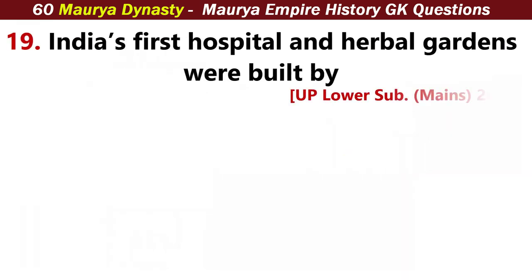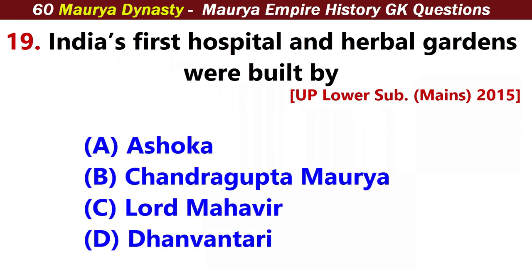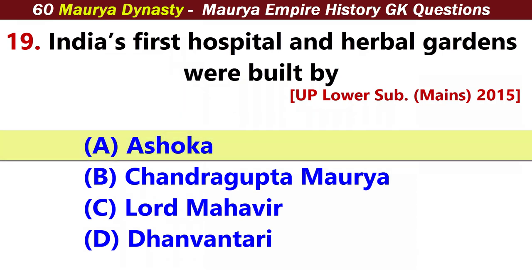India's first hospital and herbal gardens were built by? Answer A: Ashoka.